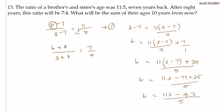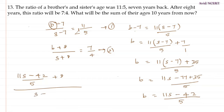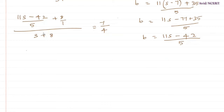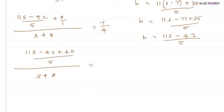Substituting this value of b in the second equation: (11s minus 42) by 5 plus 8, divided by (s plus 8), equals 7 by 4. Simplifying the numerator: (11s minus 42 plus 40) divided by 5, since 5 times 8 is 40. So the equation becomes (11s minus 2) divided by 5, all divided by (s plus 8), equals 7 by 4. Cross multiplying again.